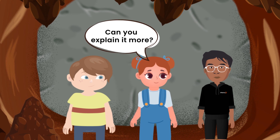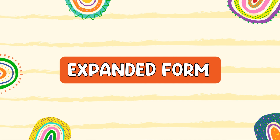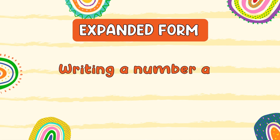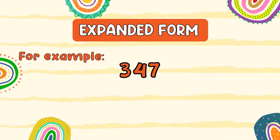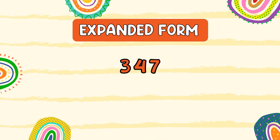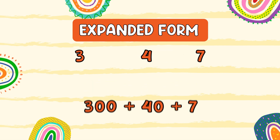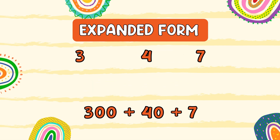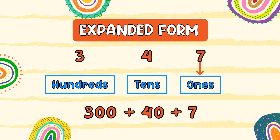I'm not sure I understand. Can you explain it more? Sure. Expanded form means that we write a number as the sum of its place values. For example, the number 347 can be written in expanded form as 300 plus 40 plus 7. In the number 347, 3 is in the hundreds place, 4 is in the tens place, and 7 is in the ones place. If you want to learn about place value and place value system, click on the i button.